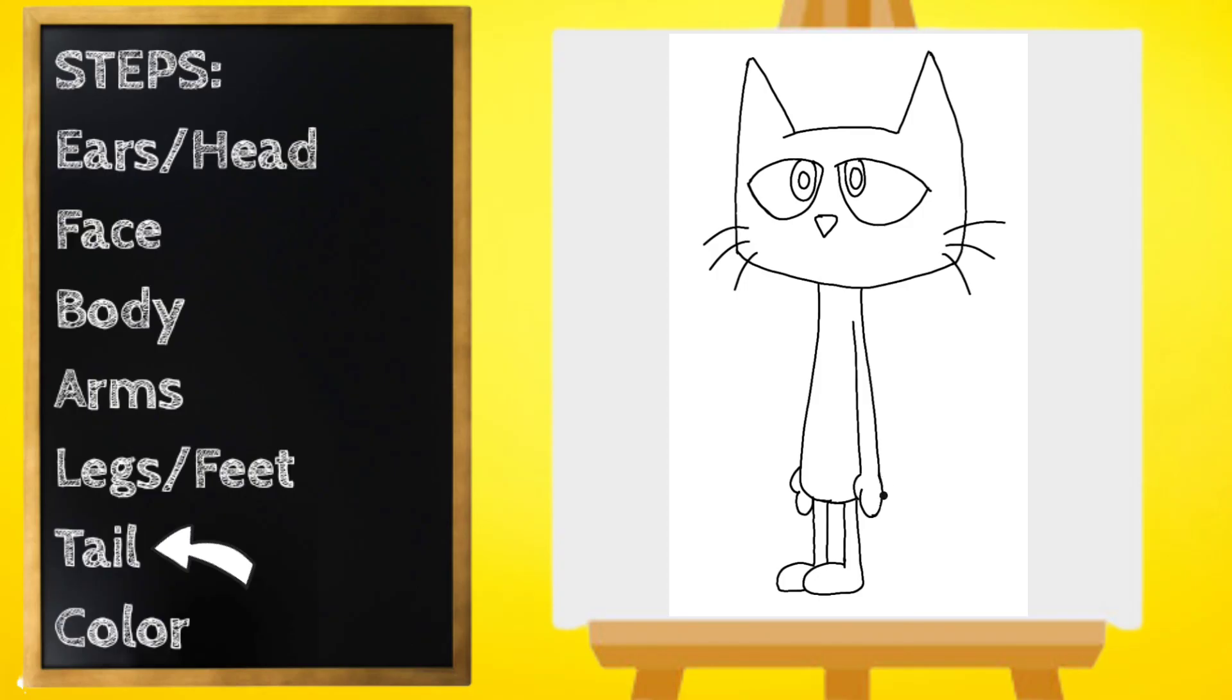Last step, let's draw Pete's tail. Start over here by his hand, and his tail is going to curve down and back up, and we'll loop it right around.